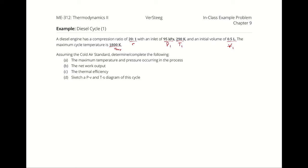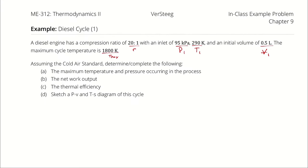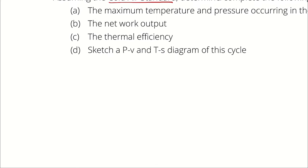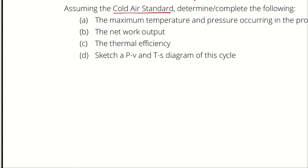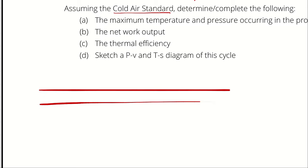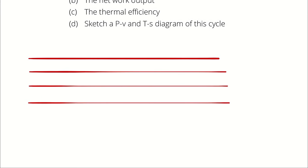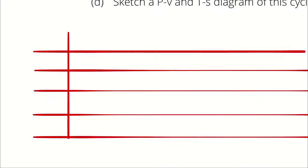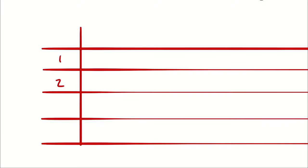Which state point has the maximum temperature? The one after the fire — the highest temperature occurs at the state point after combustion. Therefore, T_max is T3. We are analyzing this problem with the cold air standard, just like we did with the Otto cycle. Even though it's not strictly necessary, we'll calculate temperature, pressure, and specific volume at all four state points — it's good practice.